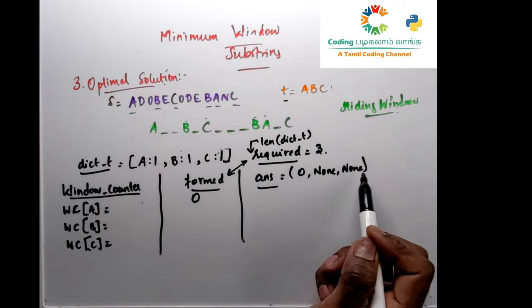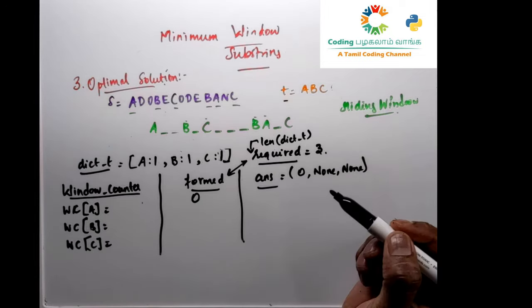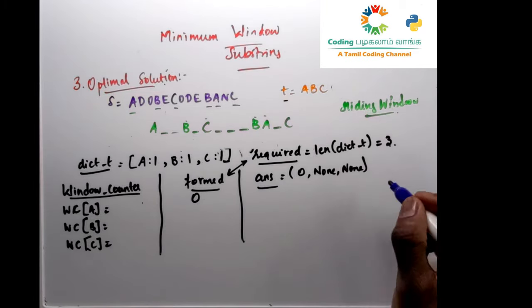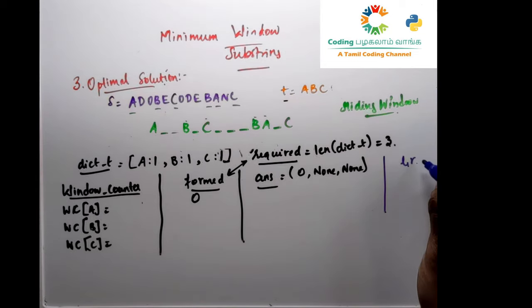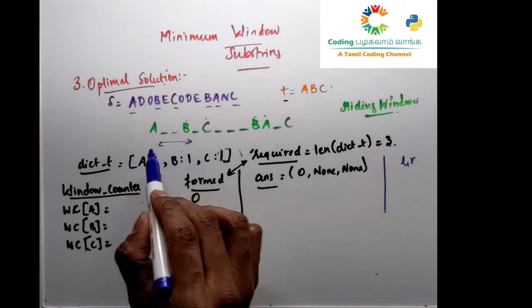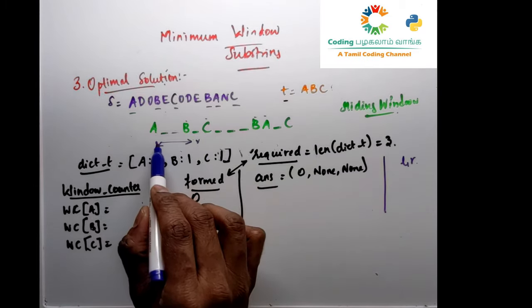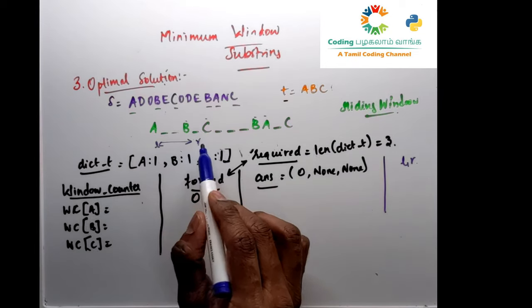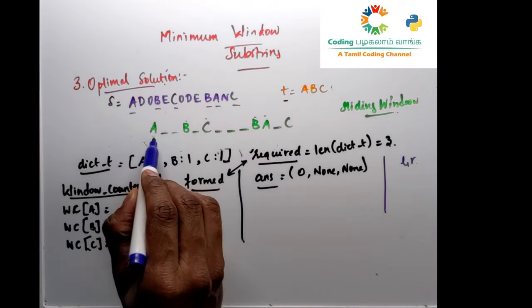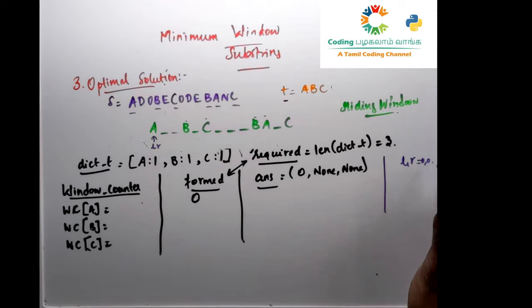Finally, we have 'window_counter' — a dictionary variable to track the count of desired characters within the current window. And we have L and R — the left and right pointers — which define the window boundary. Initially, both L and R start at index zero.